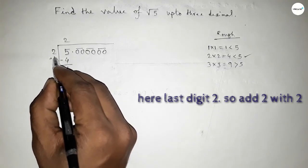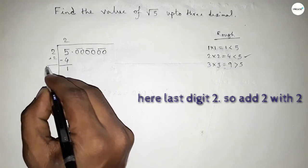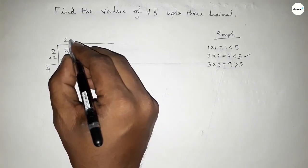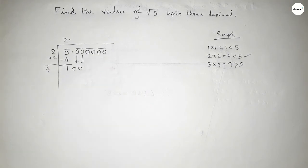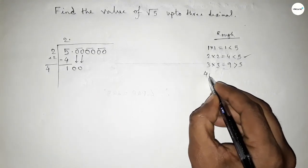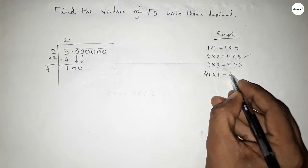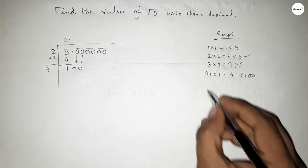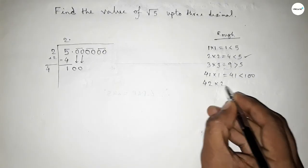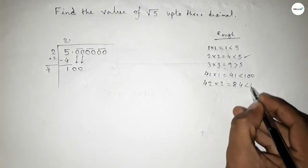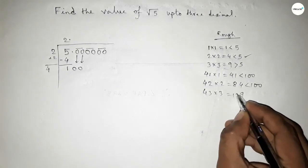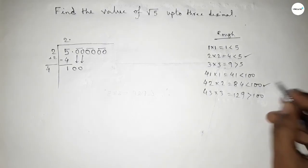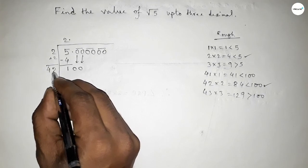Now subtracting this, and we should add by 2. So this is 4. Now this point will be here and this pair of zero is here. Now what should we put here beside 4 to get a number which is less than 100? If we put 1 and multiplying by 1 which is less than 100. If we put 2, so this is 42×2=84 which is less than 100. So we should put here 2.